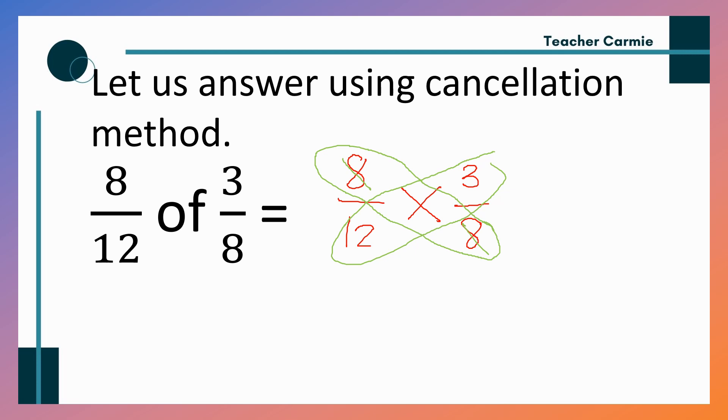Pwede natin siyang i-cancel since, both divisible by 8. So, cancel. Change tayo ng color ng ball pen. So, 8 divided by 8, 1. 8 divided by 8, 1. How about 3 and 12? So, pareho natin, pwede i-divide sa 3. So, pwede natin cancelin. Cancel. 12 divided by 3, 4. 3 divided by 3, 1. So, now, pinaliit na natin yung number. So, 1 times 1 equals 1. 4 times 1, 4.